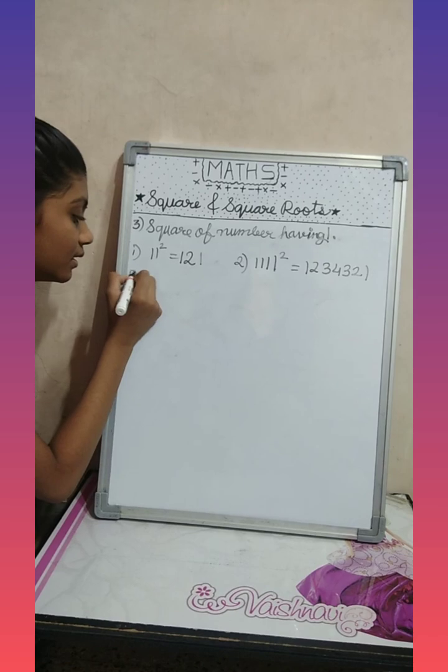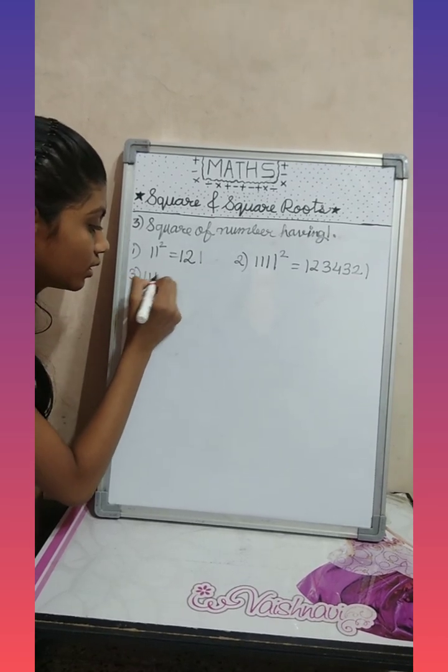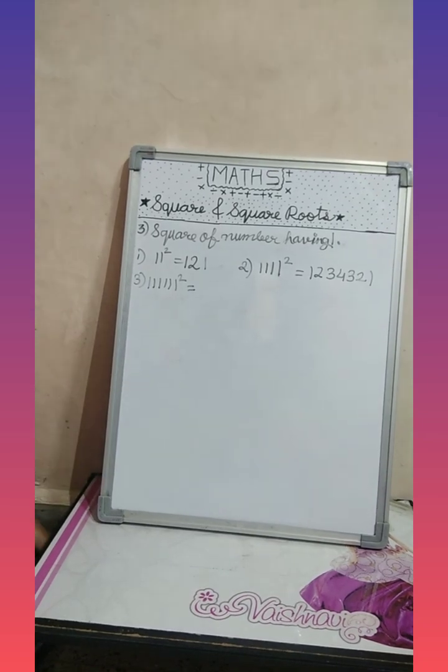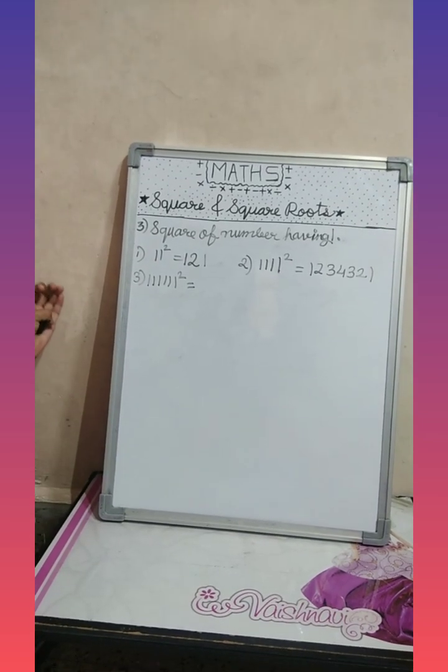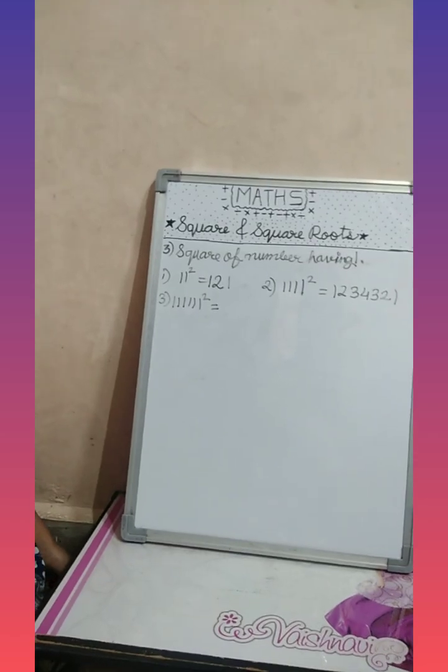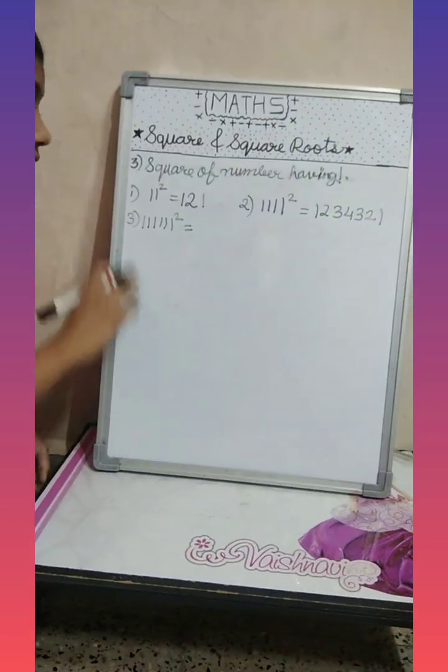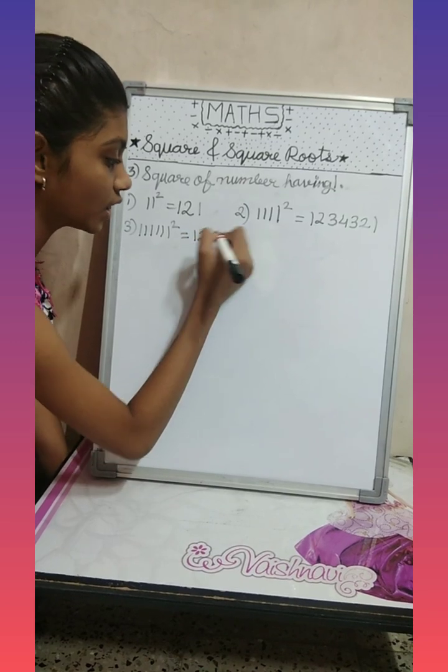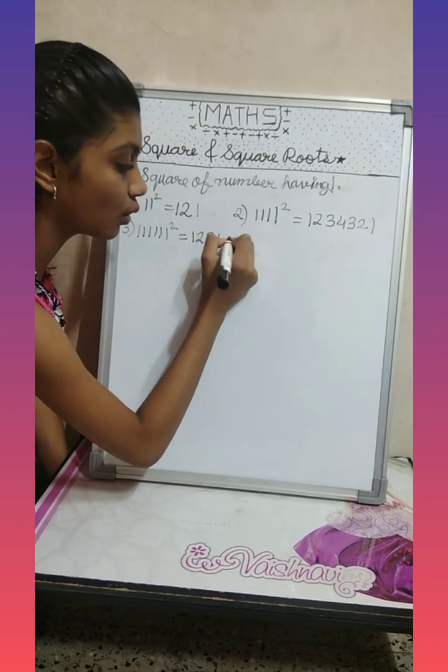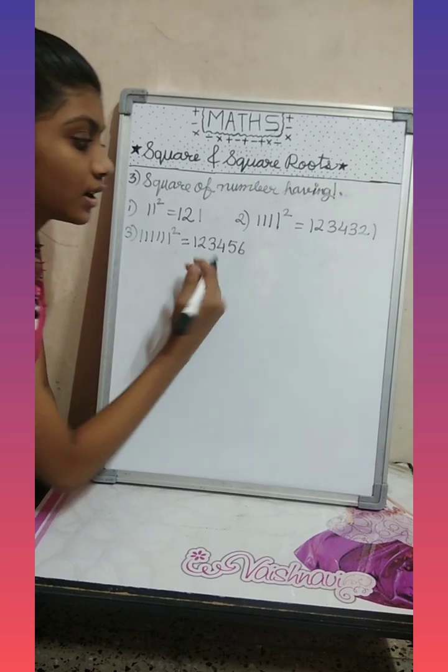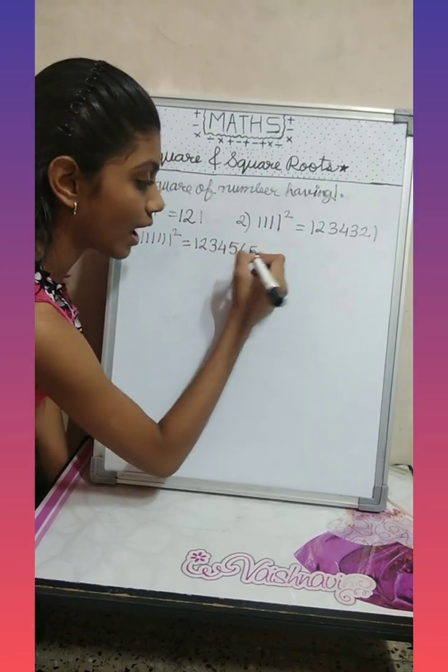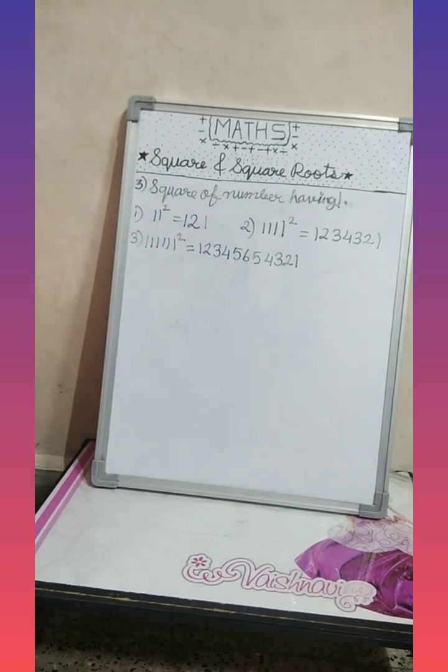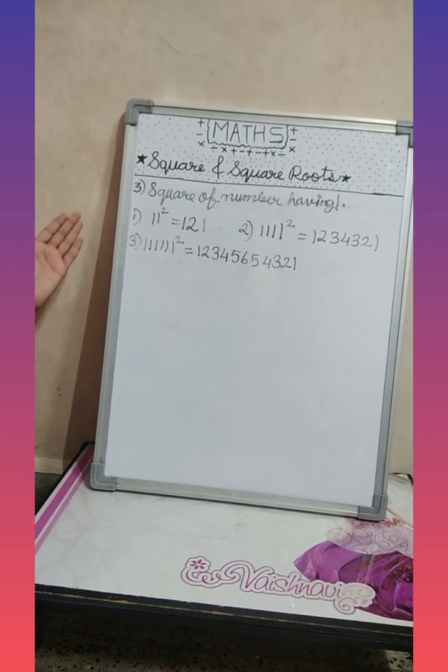So guess the answer of this one: one is six times, so we will write numbers one through six: one, two, three, four, five, six. We will write again five, four, three, two, and one. It was a simple trick. You can try it at home.